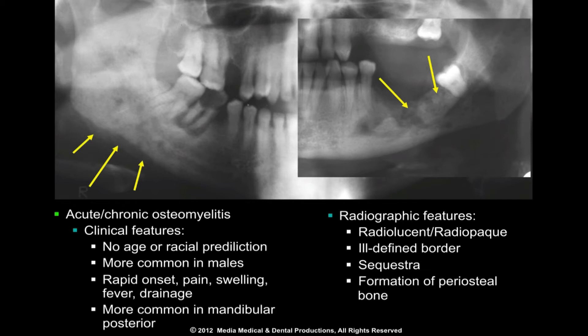This may occur intermittently, imparting an onion skin-like appearance to cortical bone. Most commonly occurring in young patients, this condition is referred to as proliferative periosteitis, formerly known as Garay's osteomyelitis.